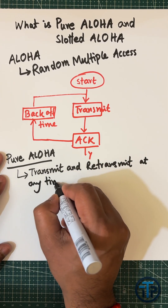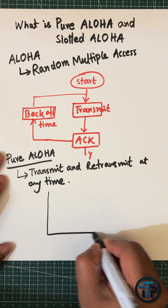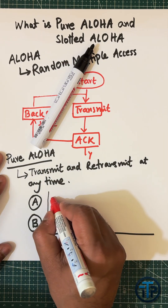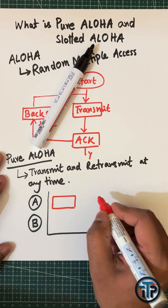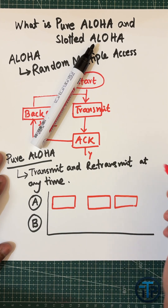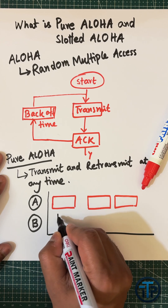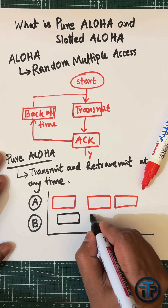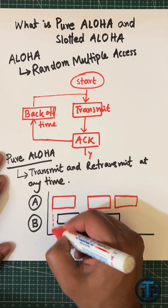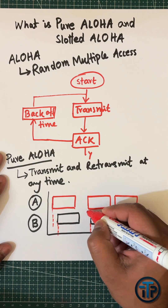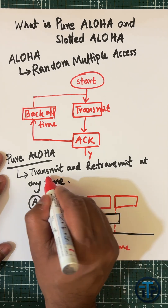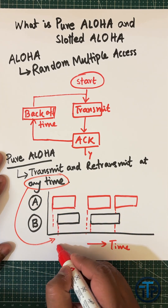In pure ALOHA, you can retransmit at any time or any random time. For example, you are waiting for a backoff time, and whatever the random backoff time is, you can retransmit again. Before talking about retransmit, let's talk about the transmission time. For example, there are two users A and B, and they can initiate the transmission at any random time.